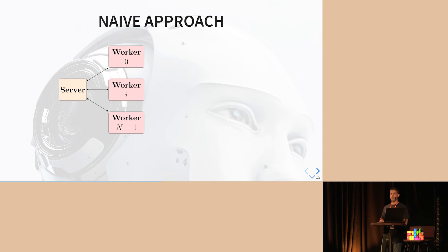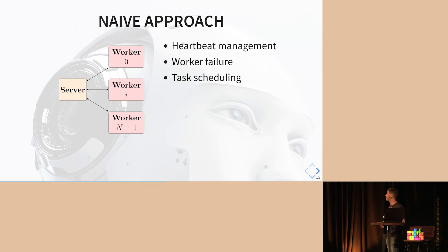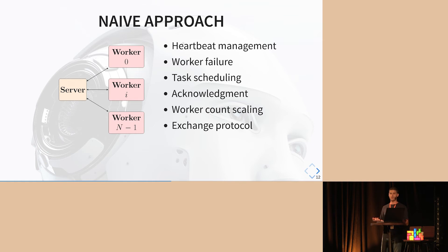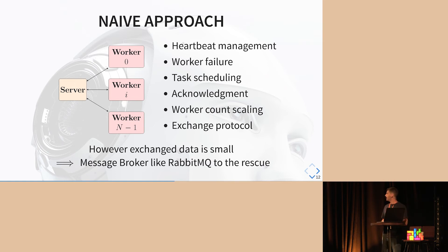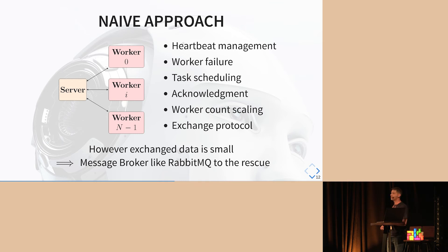If you want to do it the naive approach way, you build the software for the server and for the workers yourself and have to manage all these tasks: arbitration management, worker failure, scheduling, acknowledgement, scaling of the workers. And you have to invent a new protocol for the exchange of data. We don't want to do that because we are a research team — we want to use off-the-shelf tools. For that, we started with RabbitMQ, because it's easy to use, and because we don't have a lot of traffic on our broker, the specific implementation is not really what matters. The point is we have an element that handles all these problems for us.